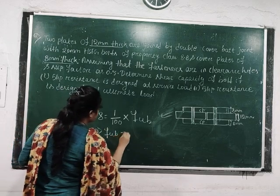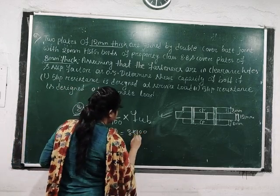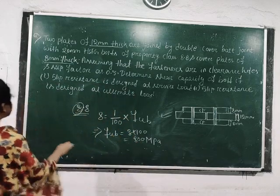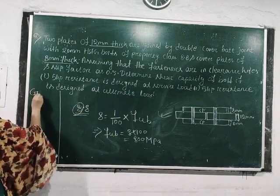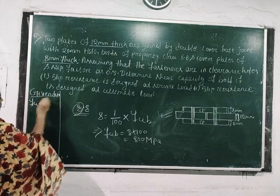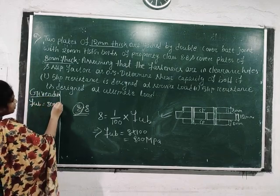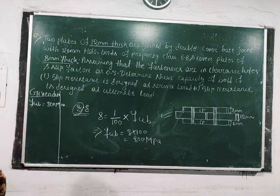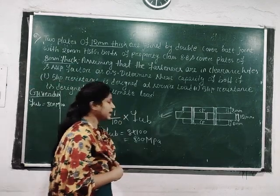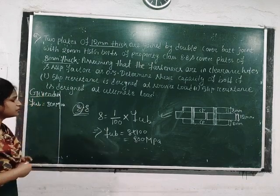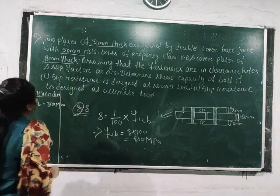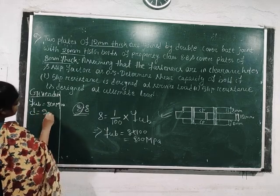The ultimate tensile strength of the bolt will be 8 × 100 = 800 MPa or N/mm². So the given data: FUB = 800 MPa, obtained from the property class 8.8 of the bolt. The diameter of the HSFG bolt is 20 mm.